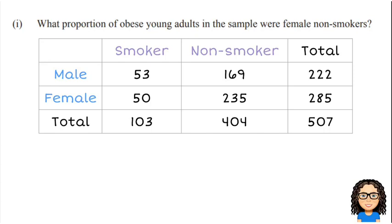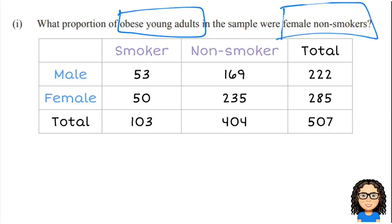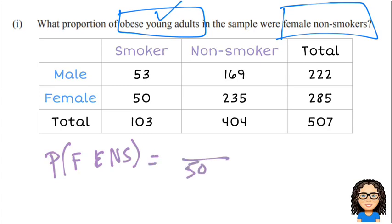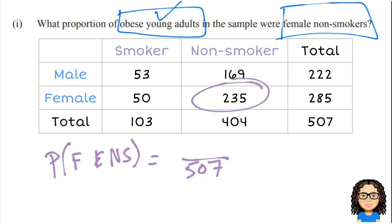Now let's look at the actual question they want us to answer: what proportion of obese young adults in the sample were female non-smokers? The whole table is about obese young adults, so we're working from the whole table. We want the probability of being female and being a non-smoker. In total we have 507 obese young adults, and the female non-smokers number is 235.